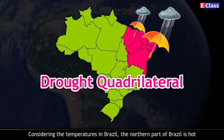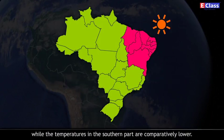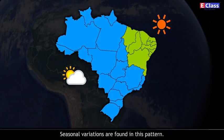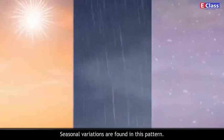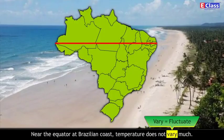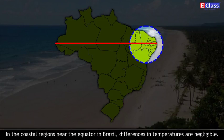Considering the temperatures in Brazil, the northern part is hot while temperatures in the southern part are comparatively lower. Seasonal variations are found in this pattern. Near the equator at the Brazilian coast, temperature does not vary much — differences in temperature are negligible.